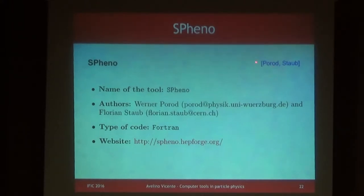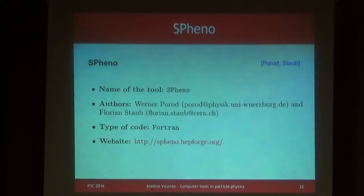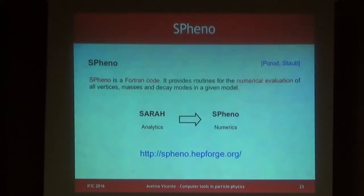Originally this code was developed by Werner Porod, but recently, in the latest versions, this has been done in collaboration with Florian Staub, because they wanted to merge SARA and SPheno in a common framework. This is based on Fortran code. Fortran is a very common language for numerical tools in physics — Fortran 90, nothing really complicated. We just want to use it, not to change the code. SPheno is the numerical application of the analytical results of SARA.